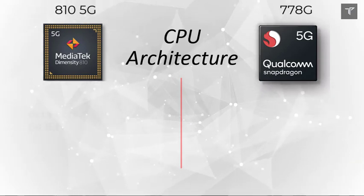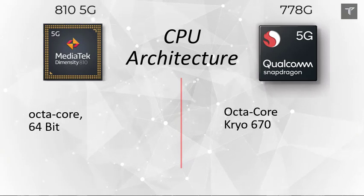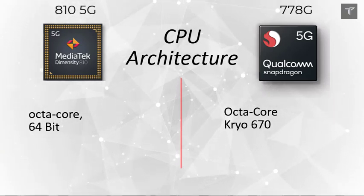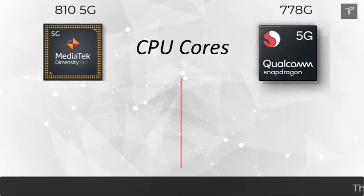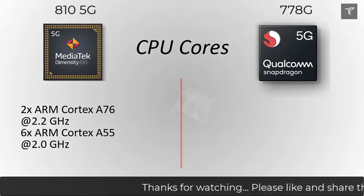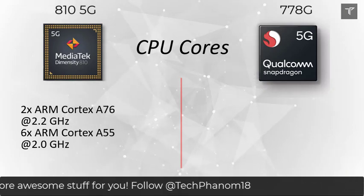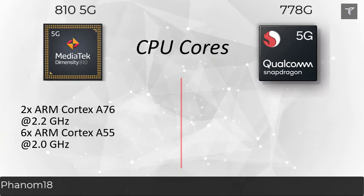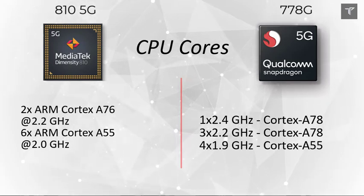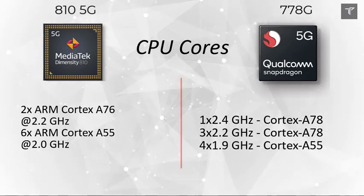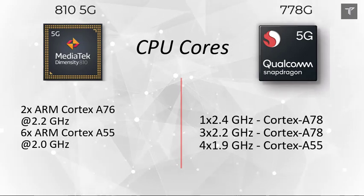Talking about the CPU architecture, both are octa-core processors. The MediaTek is 64-bit and the Snapdragon uses the Kryo 670 architecture. The MediaTek Dimensity 810 comes with two high-power Cortex-A76 cores and six power-efficient Cortex-A55 cores at 2GHz. The Snapdragon takes a different approach with one core at 2.4GHz, three cores at 2.2GHz, and four cores at 1.9GHz Cortex-A55, making the Snapdragon the better performer here.